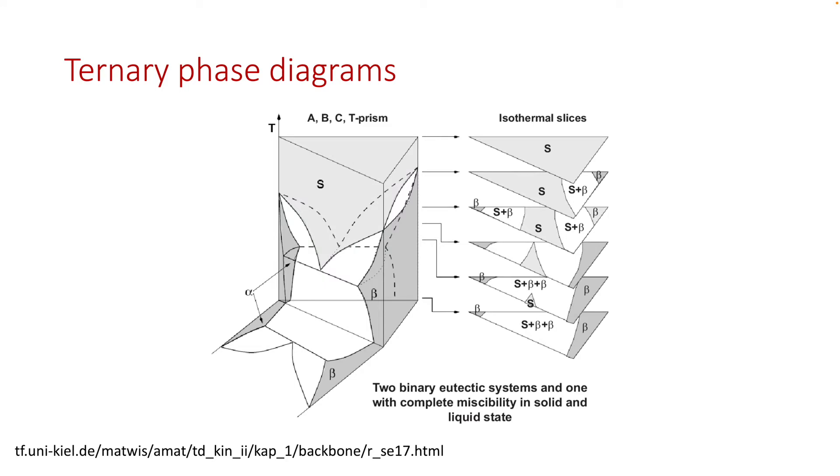In this example, at a very high temperature, everything is liquid, it's caught in the S phase. As you decrease the temperature, more and more other phases will form. Here, the 3D ternary phase diagram, that volume, can be viewed as the stacking of those equilateral triangles.